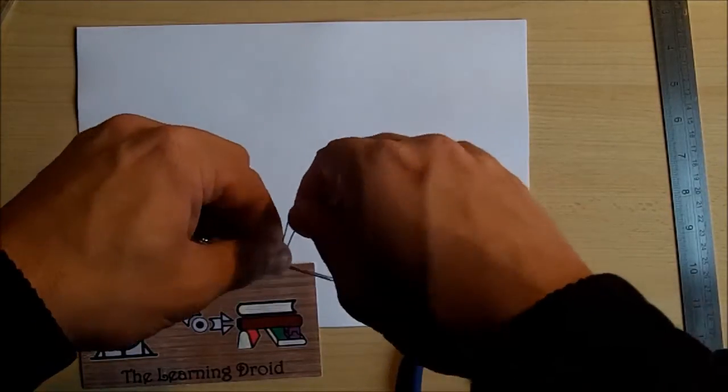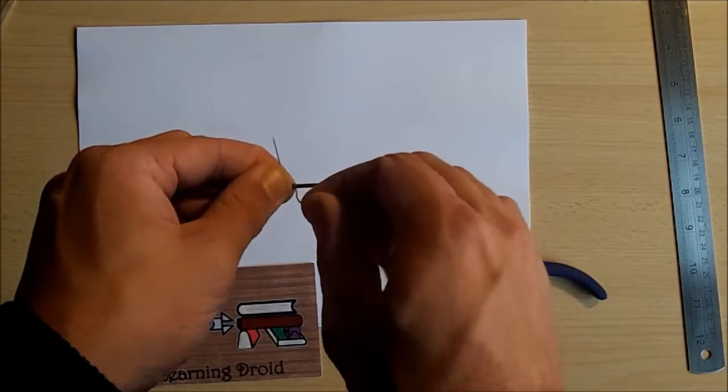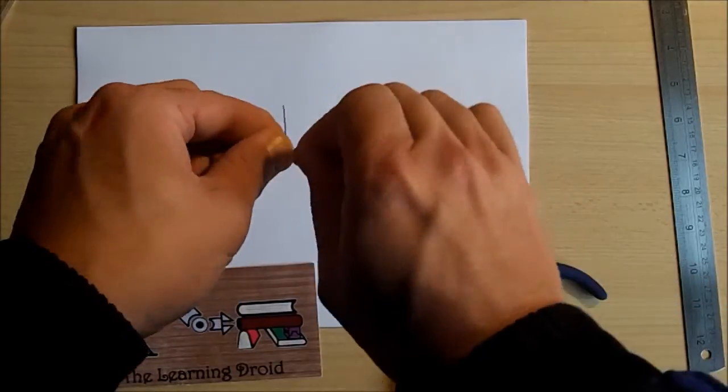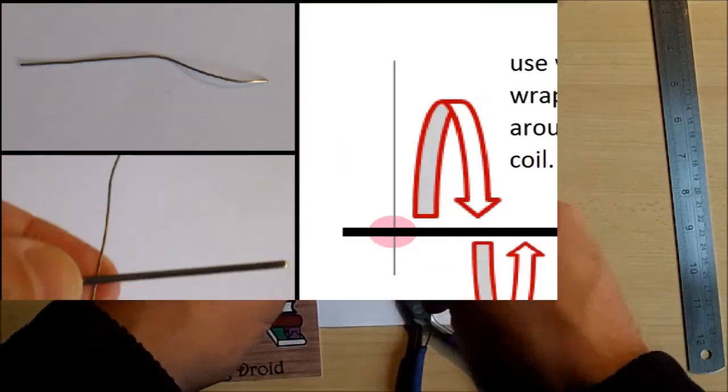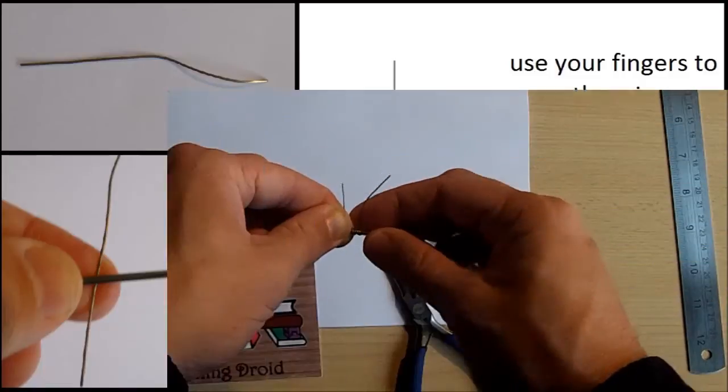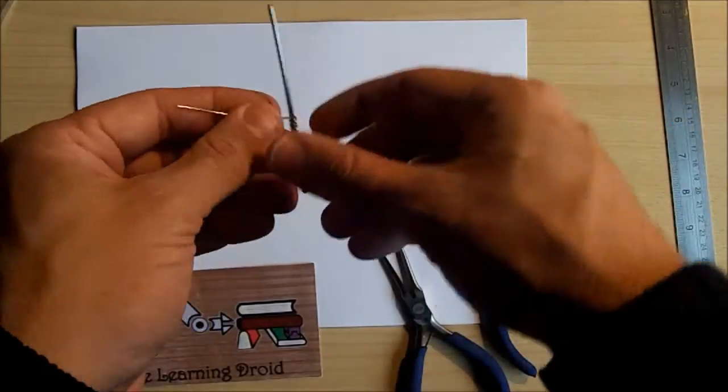From there it's literally just a case of keeping the wire pinned and wrapping 1, 2, 3, 4 times. There we go. And that is the start of our coil point.